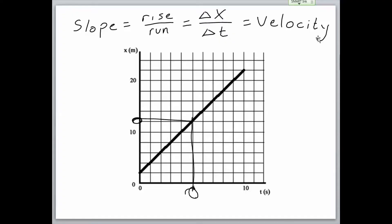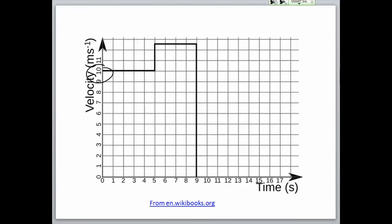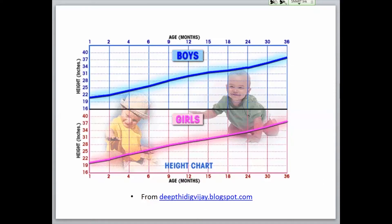Another interesting thing to look at on our graph is the y-intercept. The y-intercept on a graph always shows the starting point on the graph. Since this is a position graph, it is the starting position. If it were a velocity graph, the y-intercept would be the starting velocity, which for this graph is 10 meters per second. If we had a height versus age graph, the y-intercept would be your starting height, which would be about 20 inches for girls and 21 for boys.